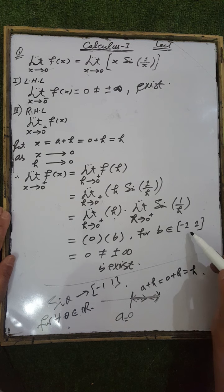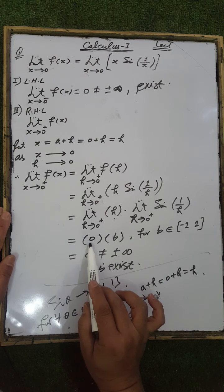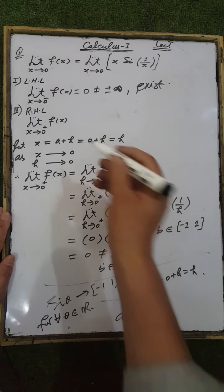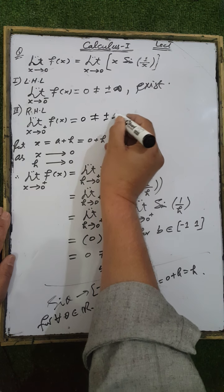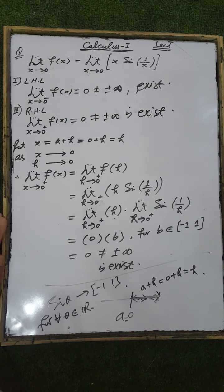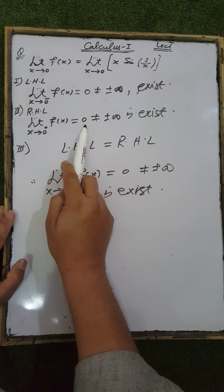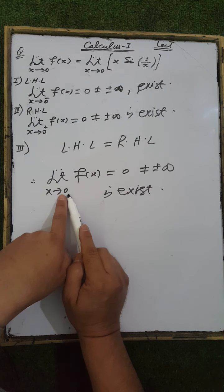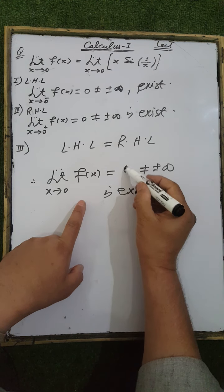Since b is any real number in the range of sin(θ) and 0 multiplied by b equals 0, the right-hand limit is equal to 0, which is not equal to plus or minus infinity, and therefore exists. Since both the left-hand limit and the right-hand limit of the function at x = 0 exist and the condition of equality holds, we conclude that the limit of f(x) at x = 0 exists and is equal to 0.